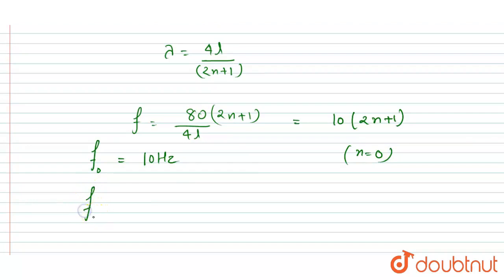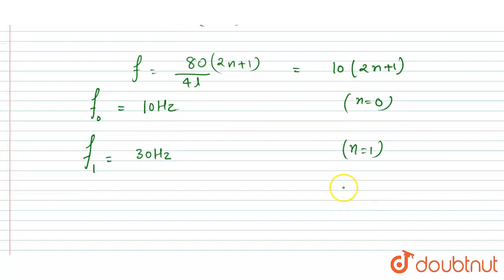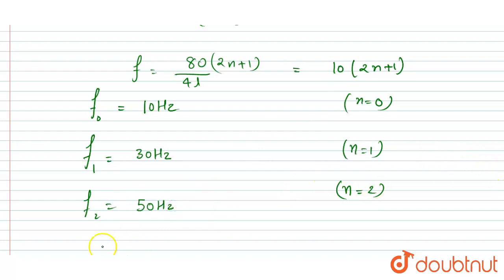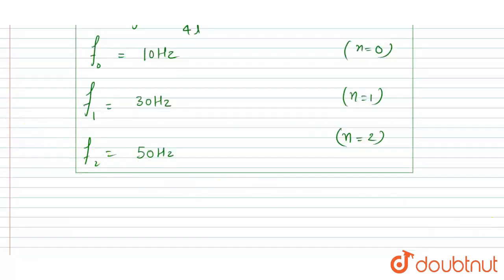For the first overtone (first harmonic), n = 1, giving (2×1+1) = 3, so the frequency is 30 Hz. For the second overtone, n = 2, giving (2×2+1) = 5, so the frequency is 50 Hz. So we get the frequencies: fundamental = 10 Hz, first overtone = 30 Hz, second overtone = 50 Hz.